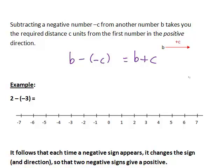It then means we're actually moving the required distance from the first number in the positive direction. So 2 - (-3), for instance, is the same as 2 + 3. Starting at 2, moving 3 units in the positive direction, that will just give us 5.